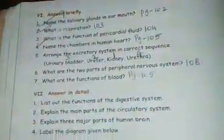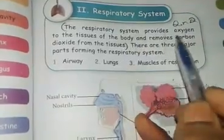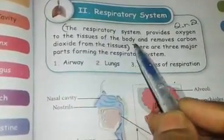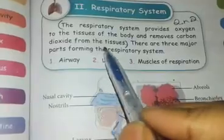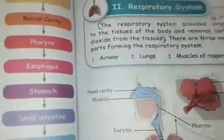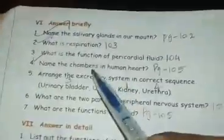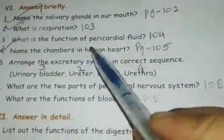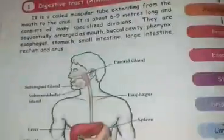Second question: what is respiration? Page number three. The respiratory system provides oxygen to the tissues of the body and it removes carbon dioxide from the tissues. That is the respiratory system answer.